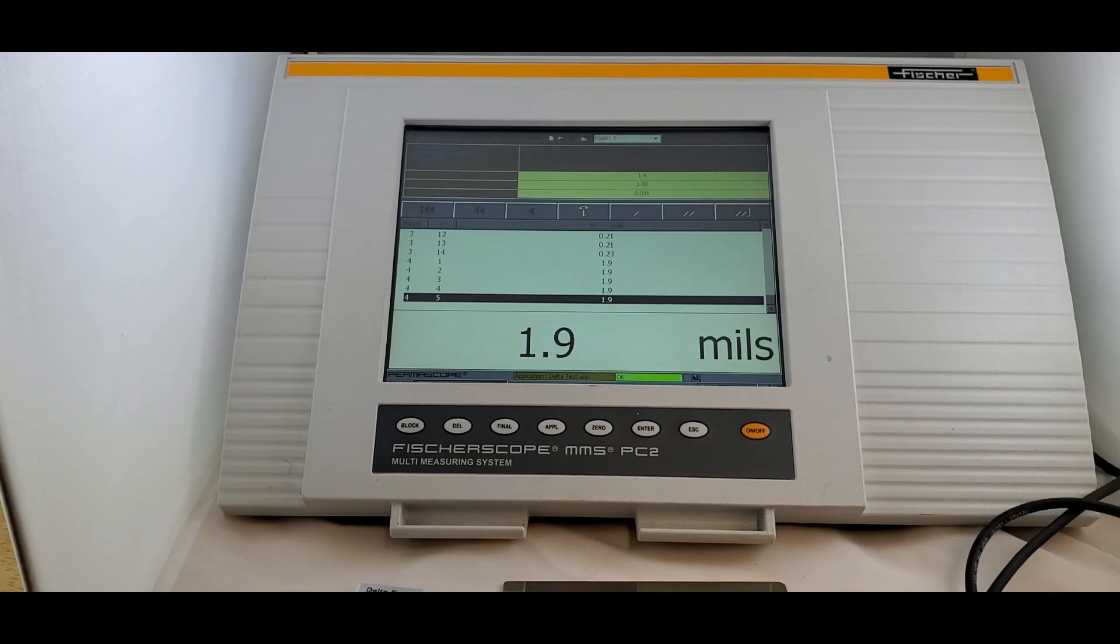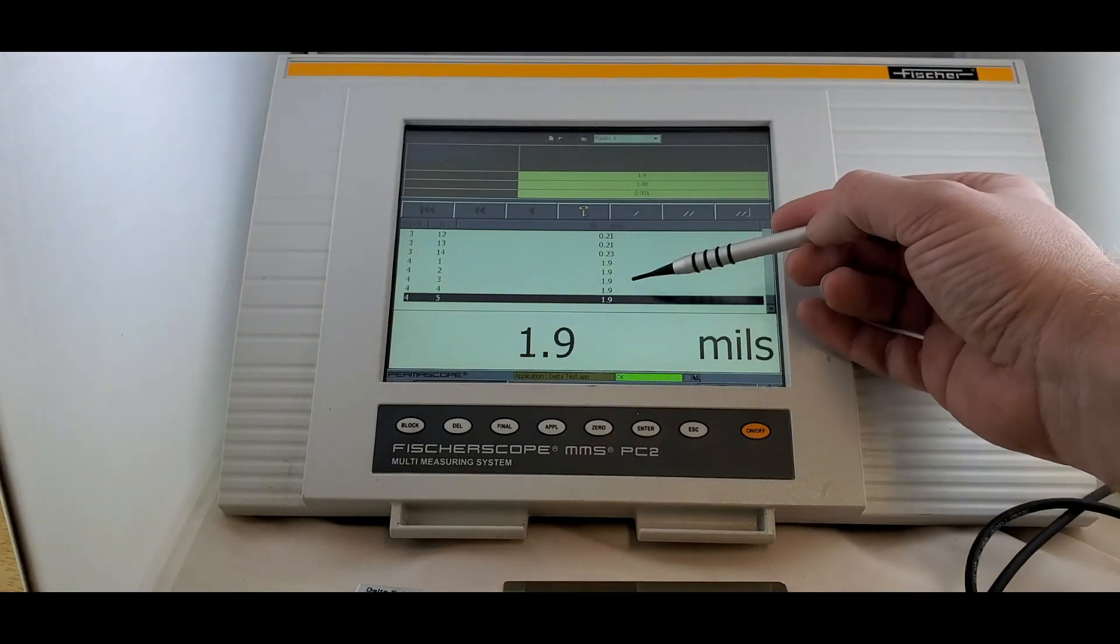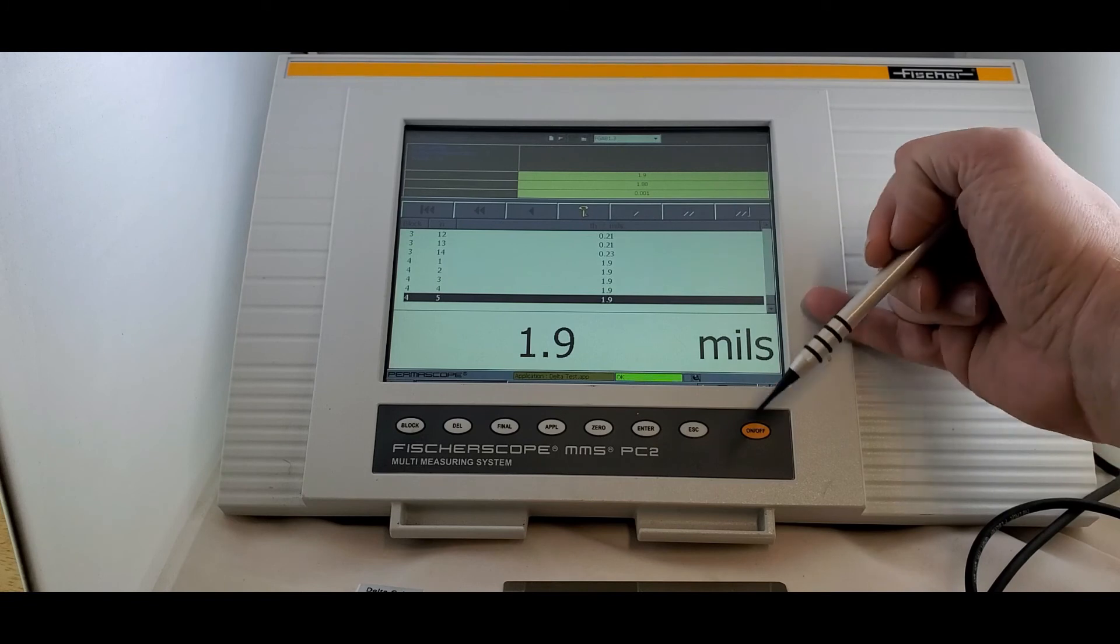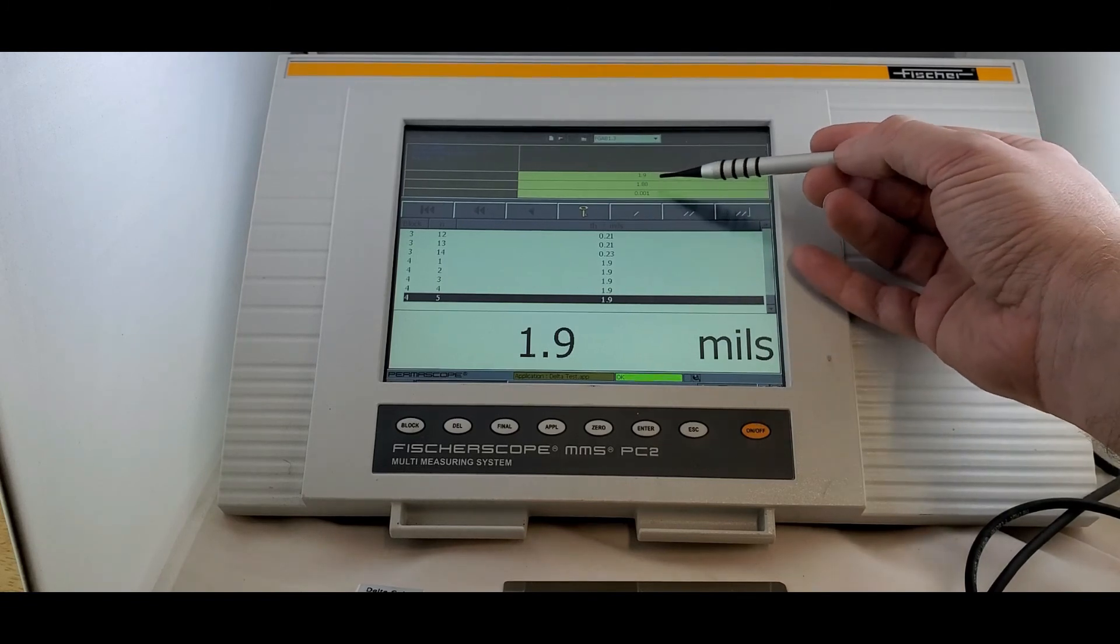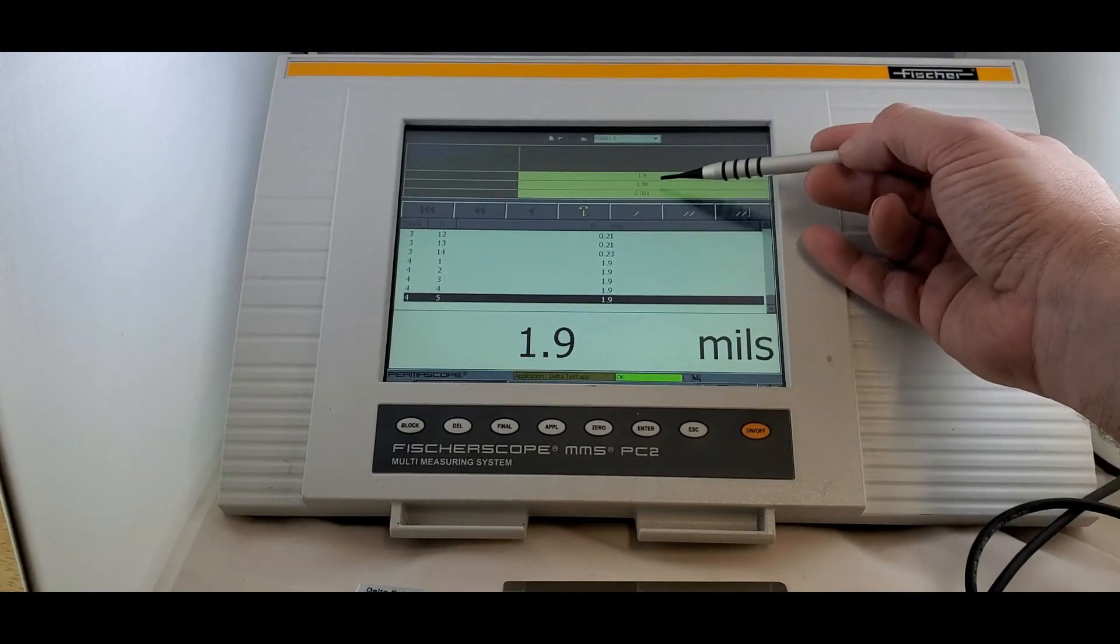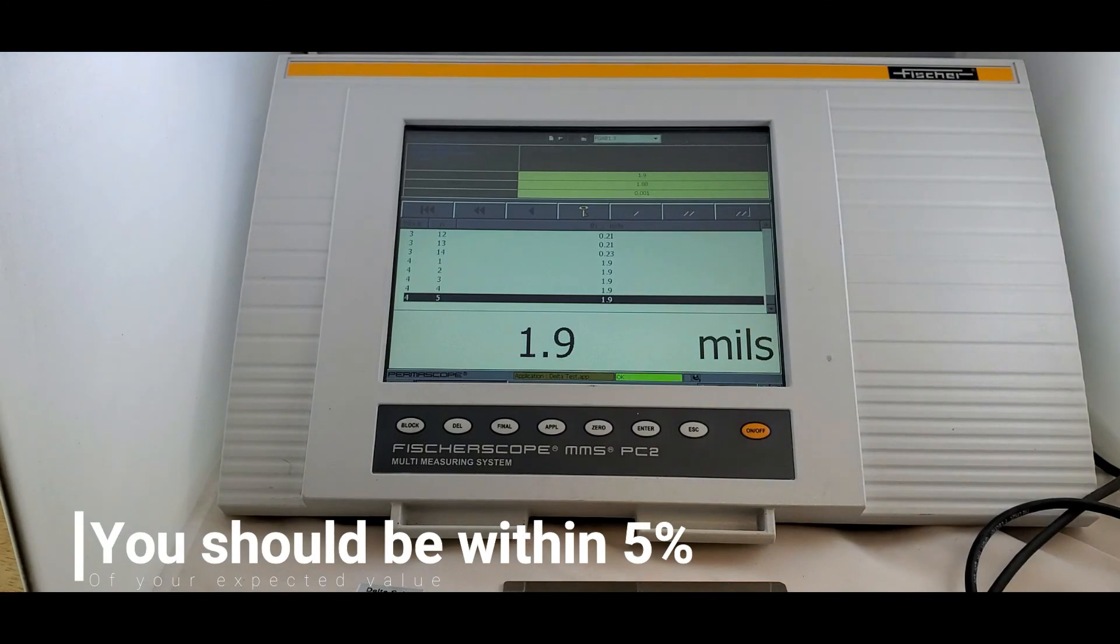Again, just doing five measurements just for the sake of getting a fairly decent sized batch of numbers. And you can see each reading was about 1.9, which is really good. The mean value of those five measurements that I took was 1.88. We're in calibration.